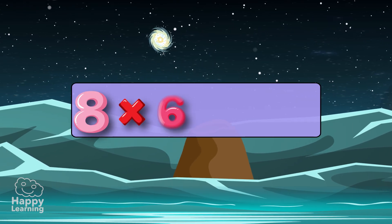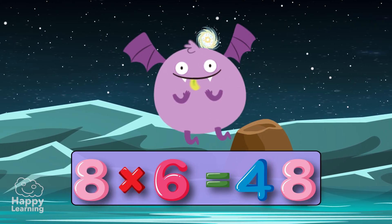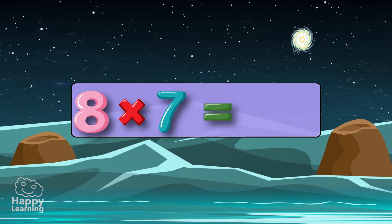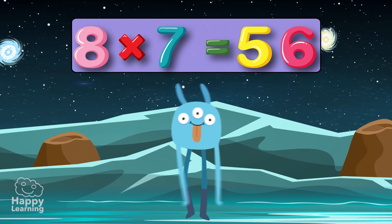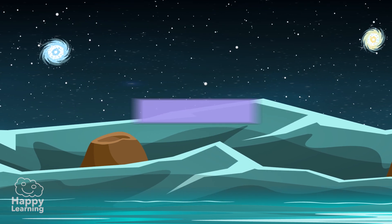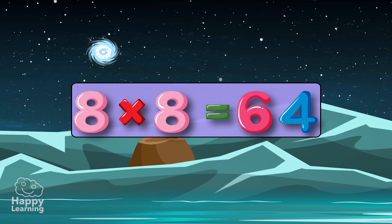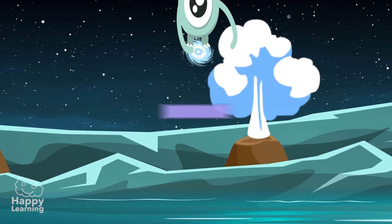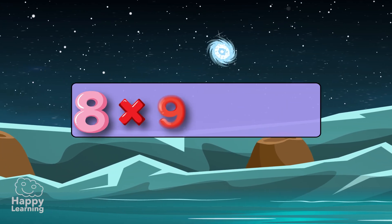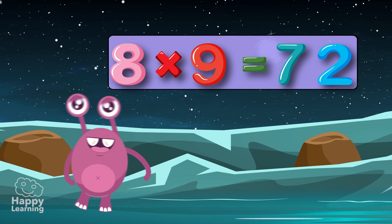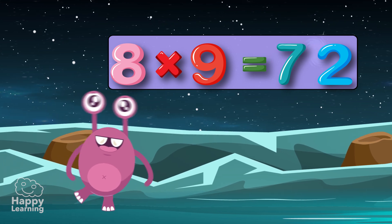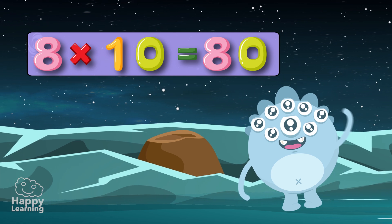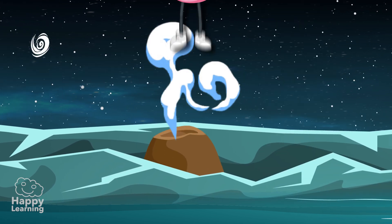Eight times six is forty-eight. Eight times seven is fifty-six. Eight times eight is sixty-four. Eight times nine is seventy-two. Eight times ten is eighty.